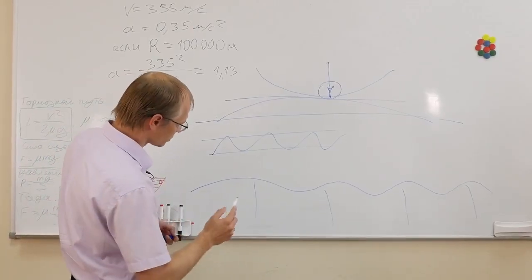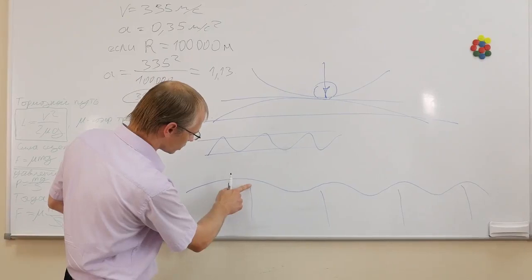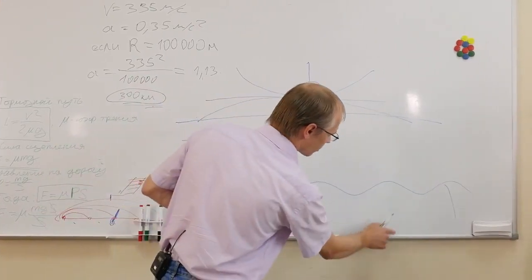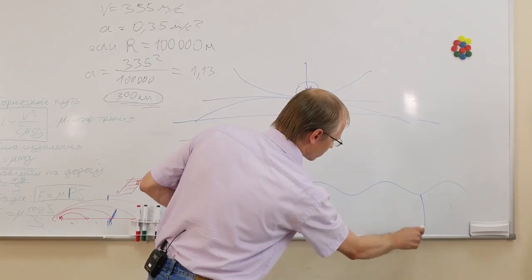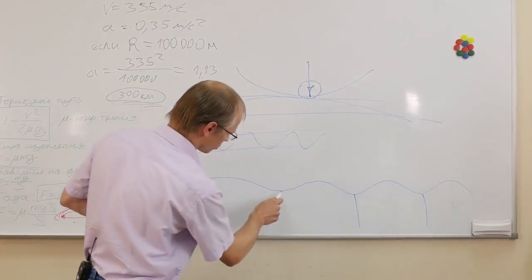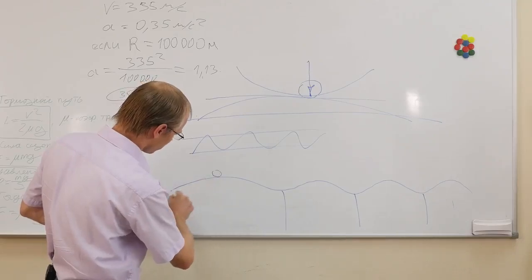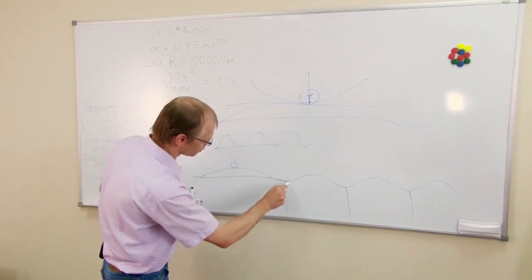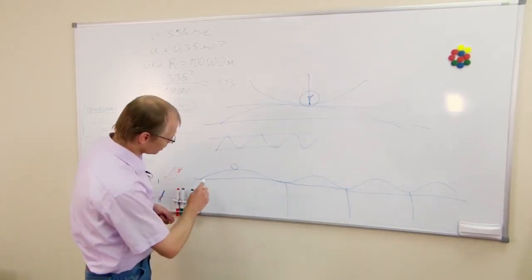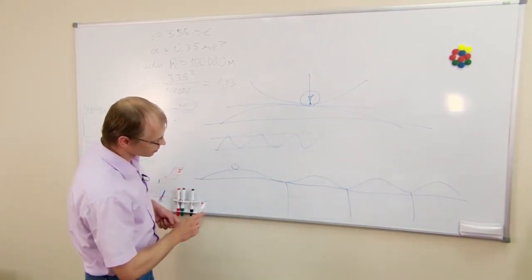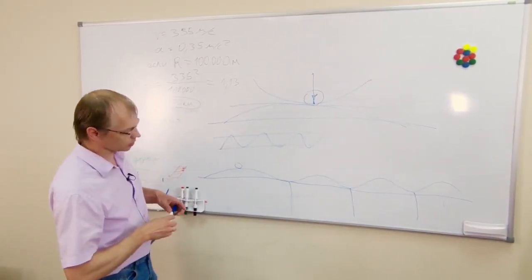Но в нашем случае опоры находятся не в этих местах, а вот в этих, в нижних точках. И фактически транспорт, наезжая колесом, выравнивает нашу путевую. И мы в любой момент времени движемся по идеально ровному рельсу.